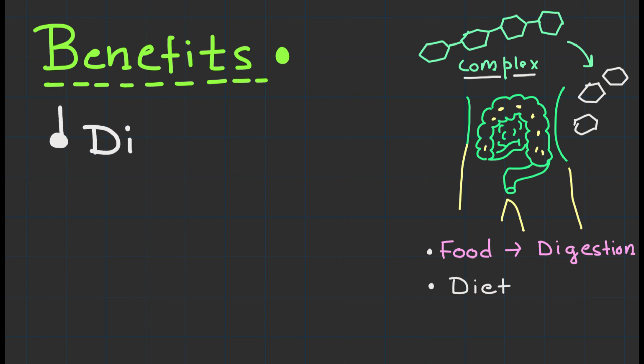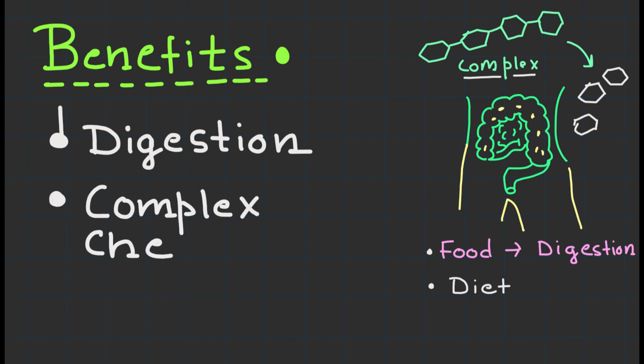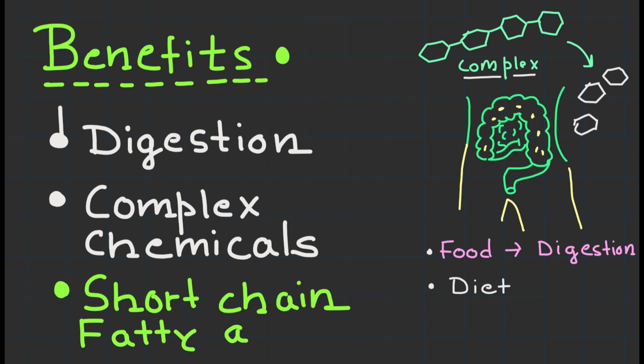First and foremost, they aid in digestion. They break down complex carbohydrates, fiber, and other components of our diet that our bodies cannot process, producing beneficial byproducts like short chain fatty acids.